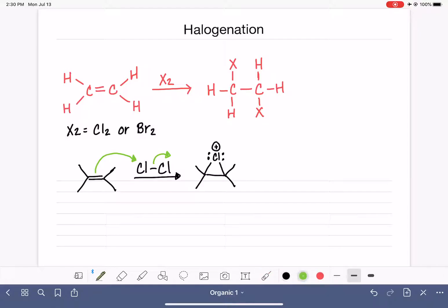The intermediate is then attacked by the chloride that's formed when the chlorine-chlorine bond breaks. So this guy right here will come in, and it will attack either one of the carbon atoms of the alkene. When we have a symmetrical alkene like this one, it doesn't matter which one we draw, which carbon is getting attacked.